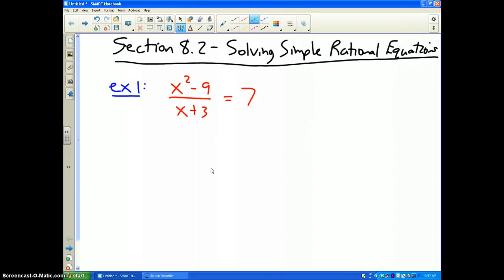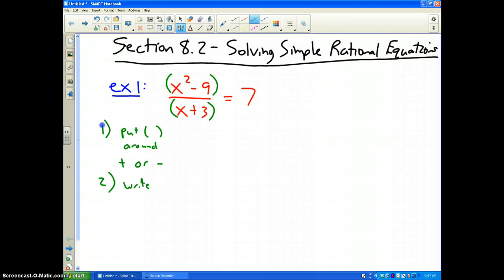x squared minus 9 divided by x plus 3 is equal to 7. If you recall the other videos, first thing we need to do is put parentheses around any addition or subtraction. So, the minus 9 goes with x squared and the plus 3 goes with the x. Second thing, write any values for x for which the denominator is equal to 0.